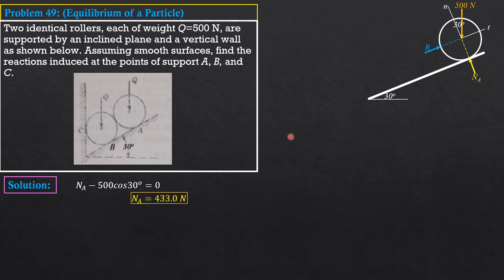Then, summation forces tangential equals 0. R minus 500 sine 30, the tangential component of 500 is minus 500 sine 30, equals 0. So, R is 250 newtons.